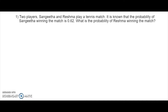In this video, I am taking different types of probability-based questions with different real-life scenarios. Like the first question, they are saying there are two players, Sangeeta and Reshma. The probability of Sangeeta winning the game is 0.62. We have to find the probability of Reshma winning the game. Reshma can win only when Sangeeta loses.